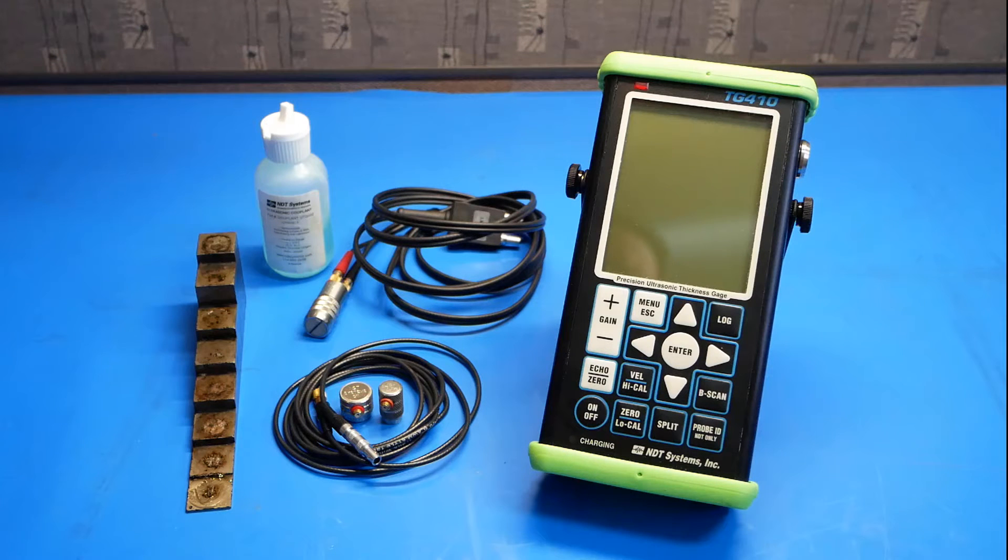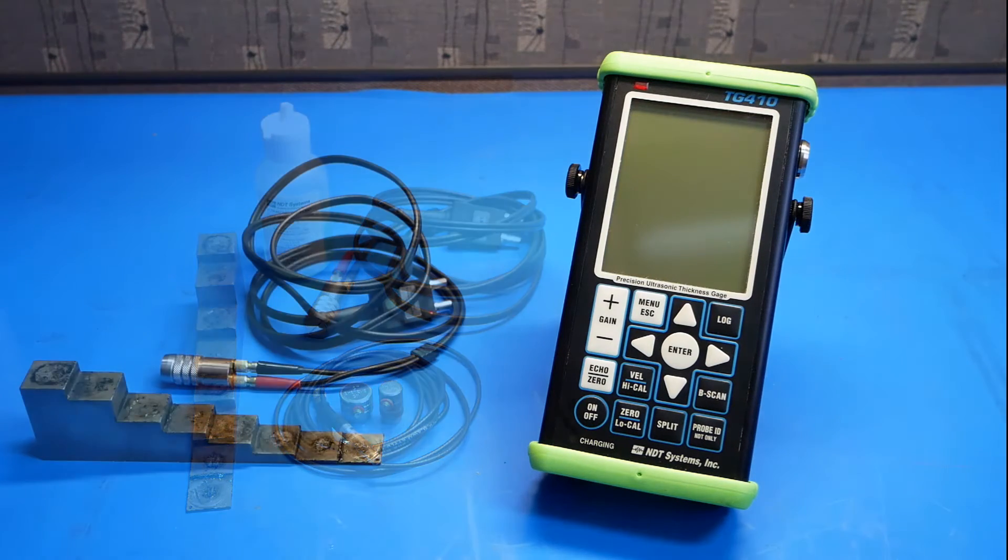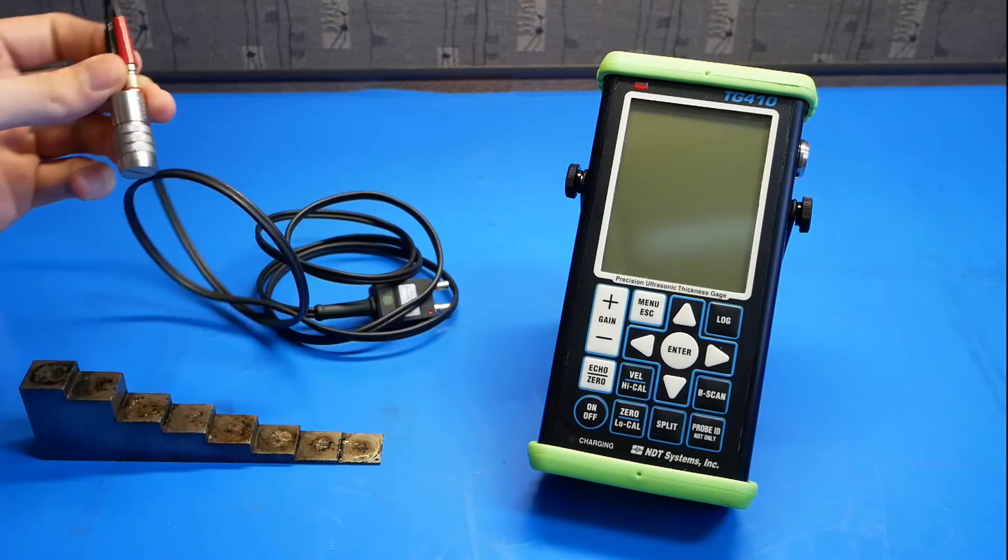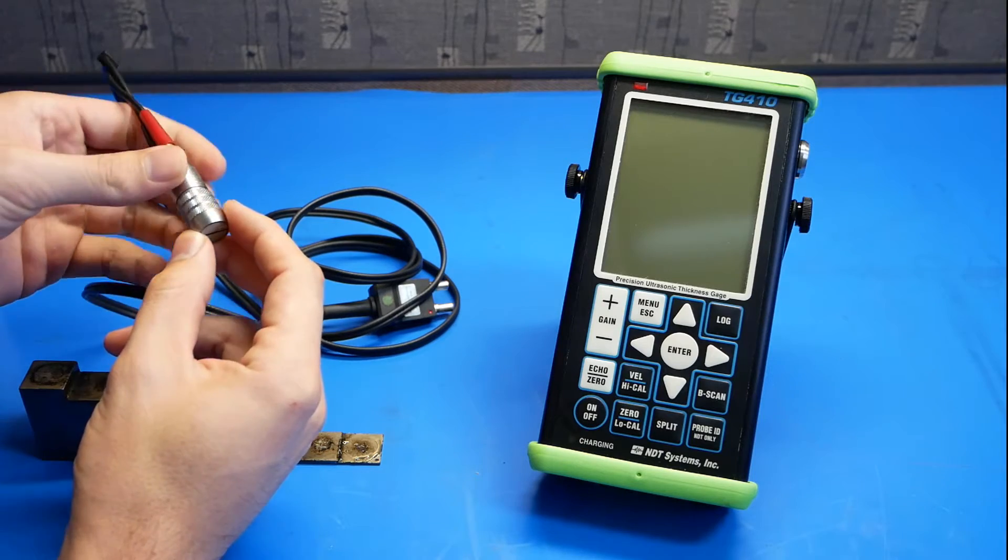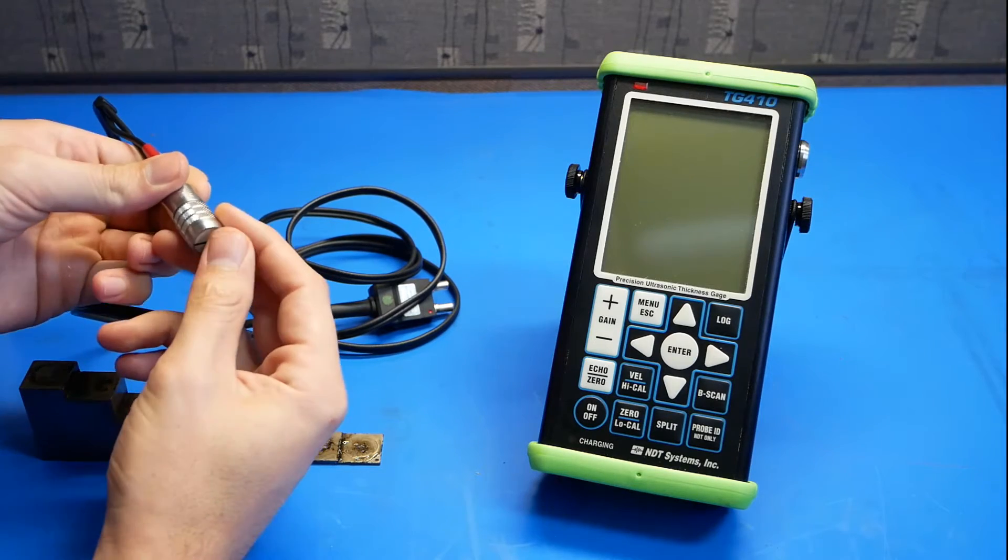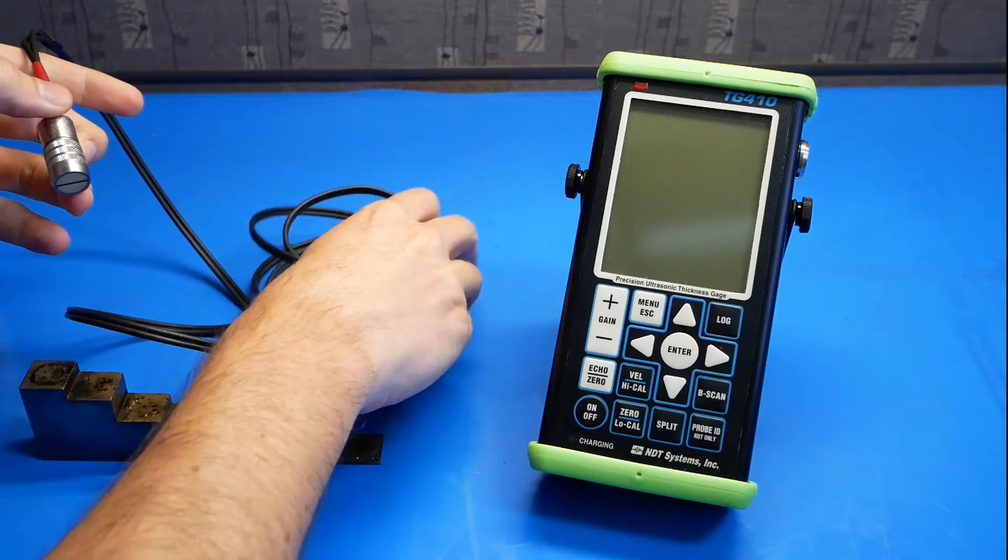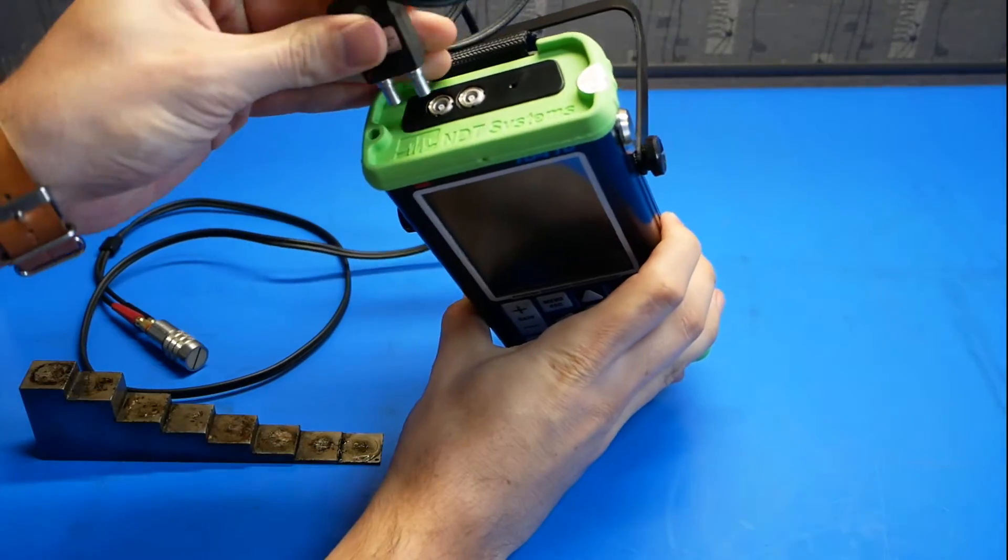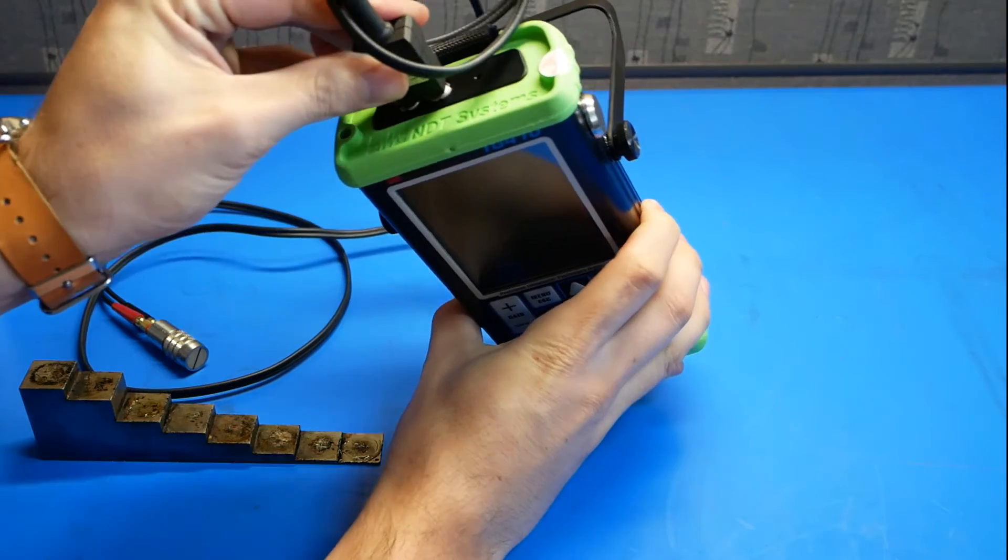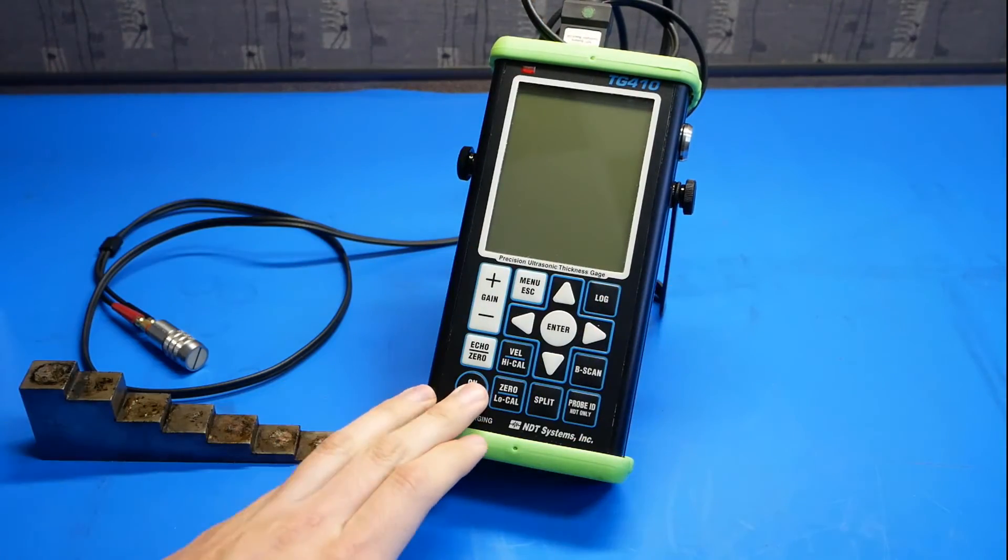Let's get started with the dual element probe. This dual element probe is a TG506. It's 5 megahertz and has a 0.375 element diameter. To get started, we'll go ahead and plug it into the gauge. We'll turn the gauge on.